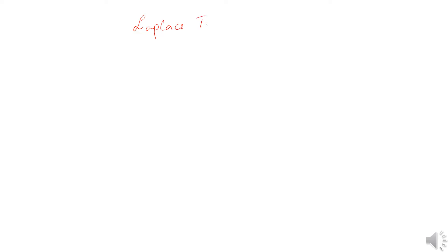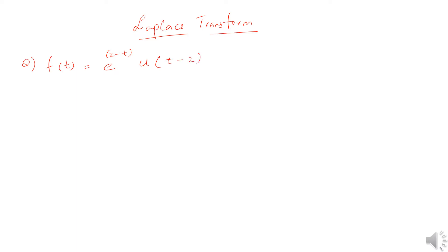Hi guys, welcome to our video lecture series on Laplace transforms. Today we will continue our previous topic, the unity step function or Heaviside function, and work through an example to make the concepts clearer. The function we are given is f(t) = e^(2-t) multiplied by the unit step function u(t-2).